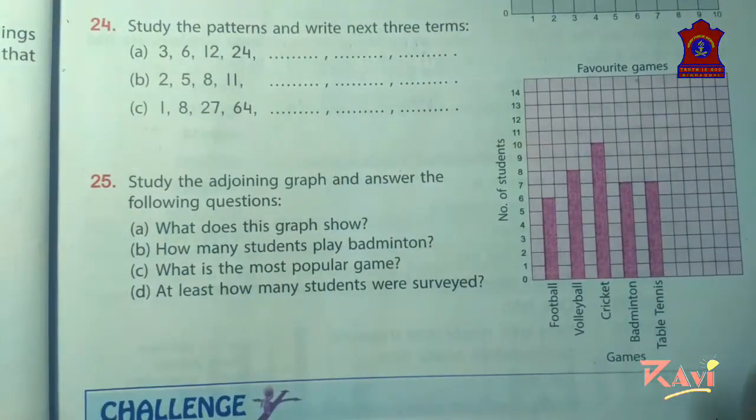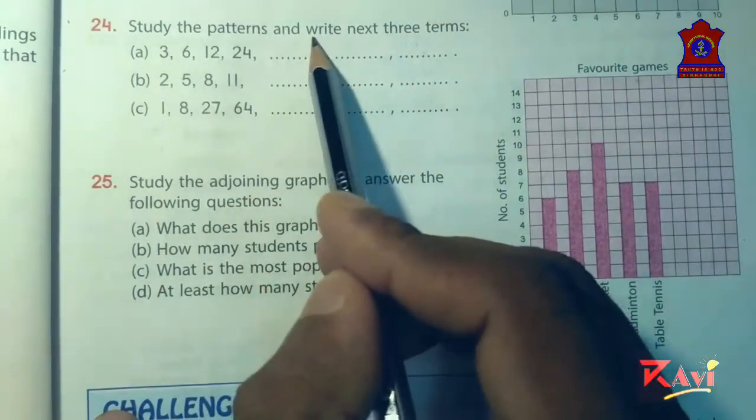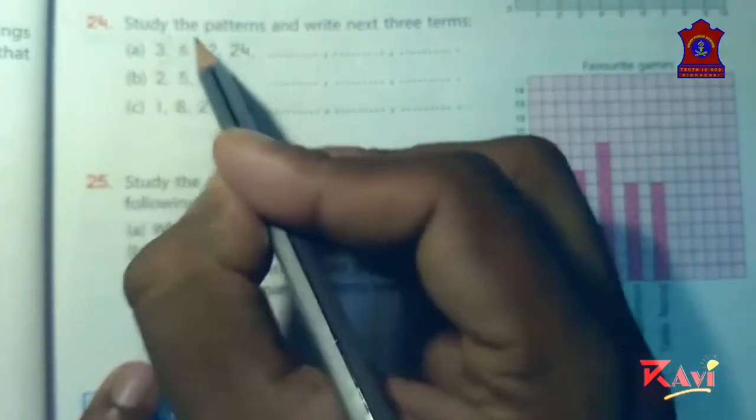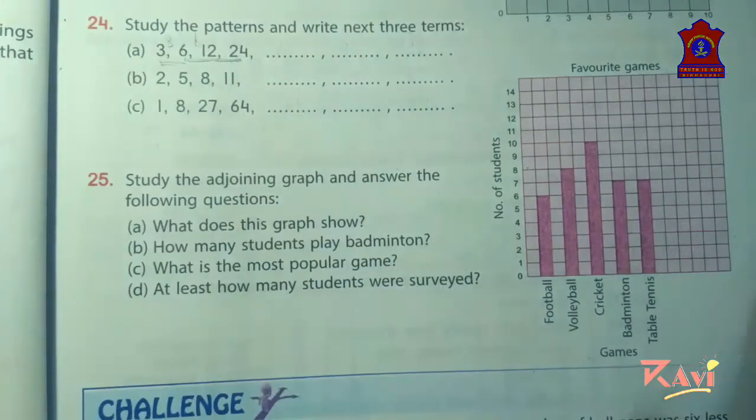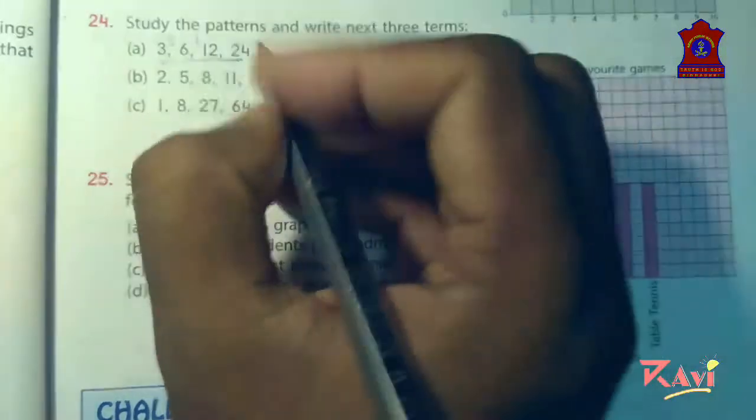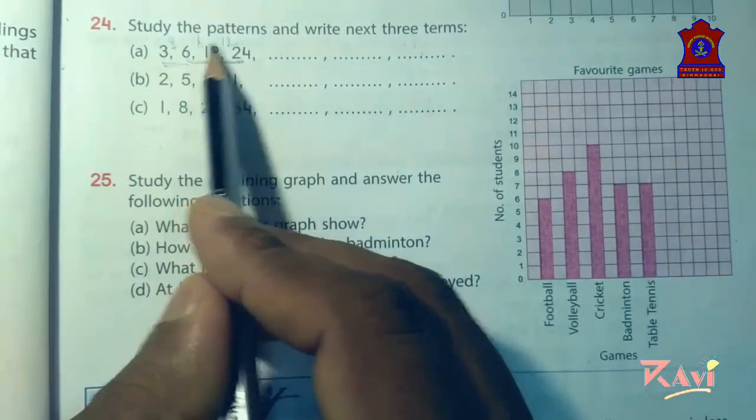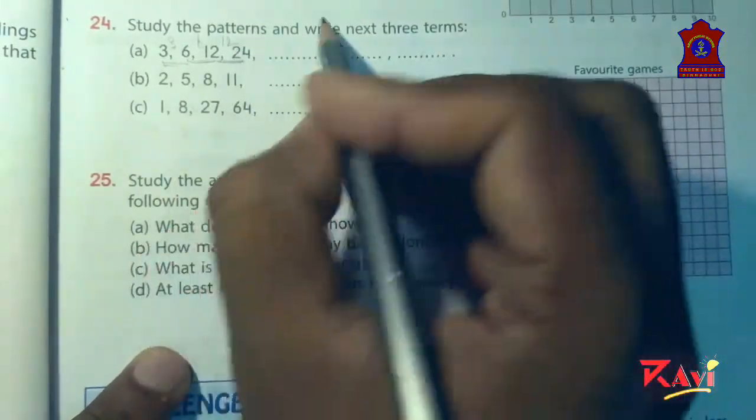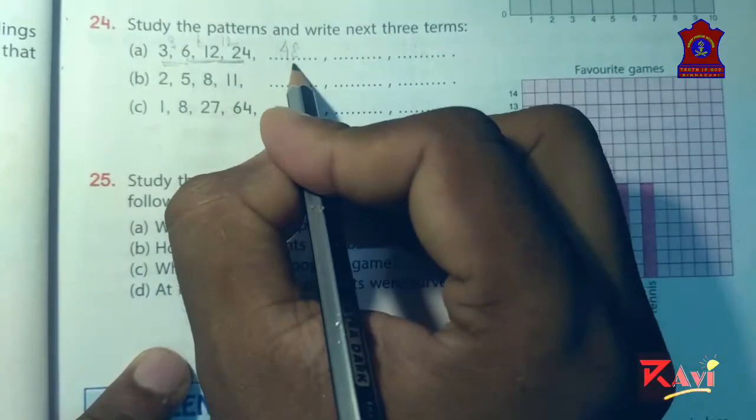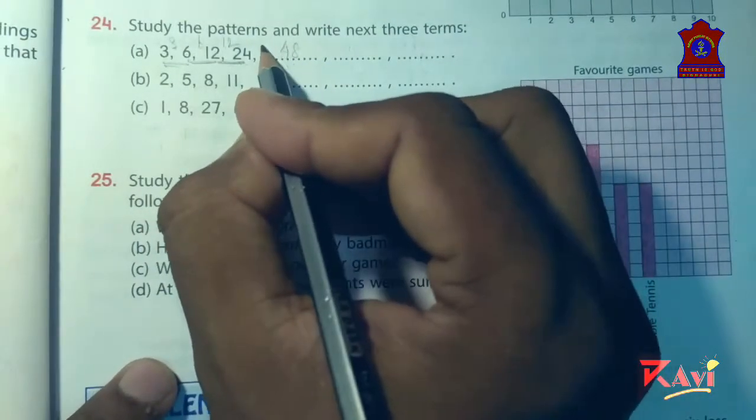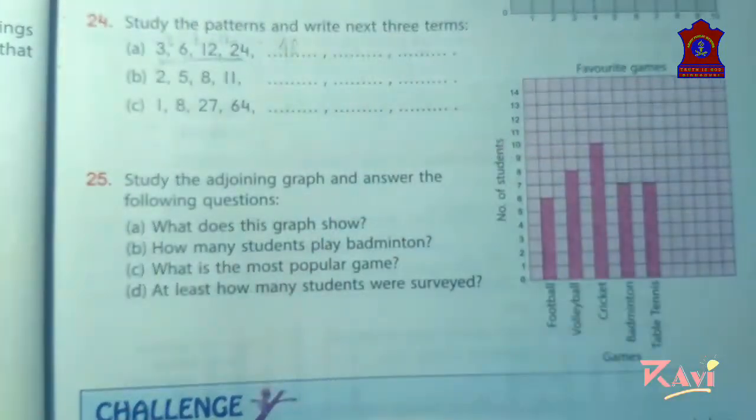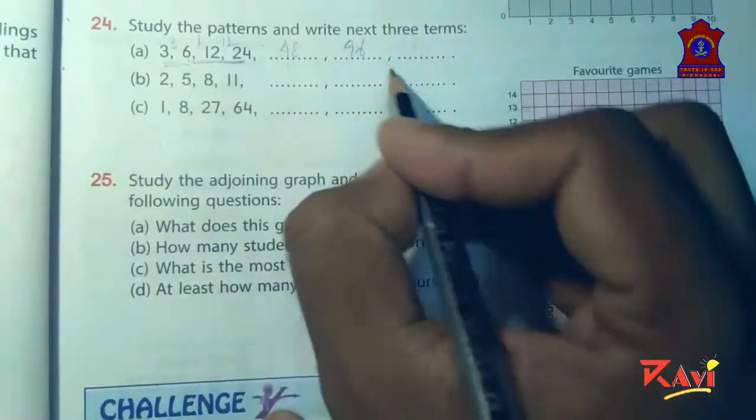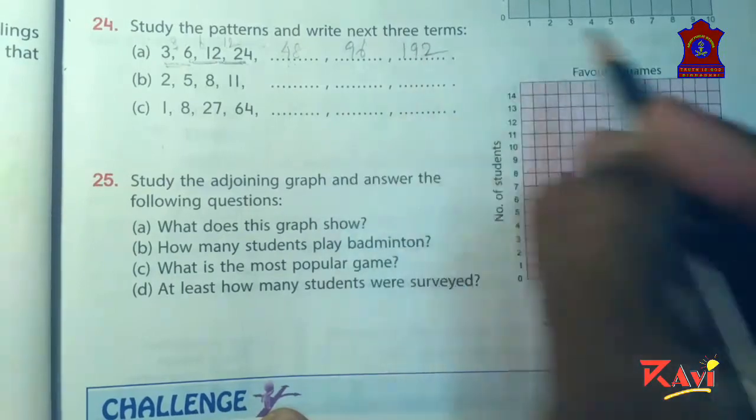Now let's move to question number 24. Study the patterns and write next three terms. Find the difference between these two. 3 and 6, the difference is of 3. 6 and 12, the difference is of 6. The difference is of 12. So the difference is 3, 6, 12 - it is becoming double. Now what is the double of 12? 24. So 24 will be added to 24, giving 48. What is the double of 24? 48. 48 plus 48 is 96. What is the double of 96? 192. Like this.